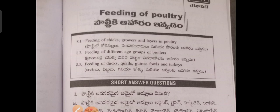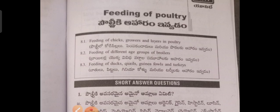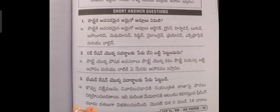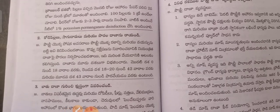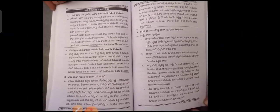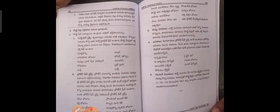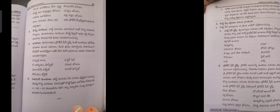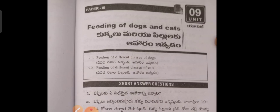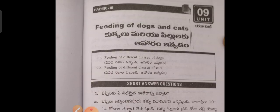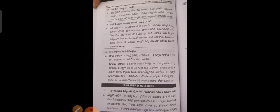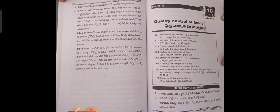Next, the eighth unit covers Feeding of Quality Poultry/Fowls, with three sub-topics and important questions. The ninth unit is Feeding of Dogs and Cats, with two sub-topics. The tenth unit is Quality Control of Feeds.